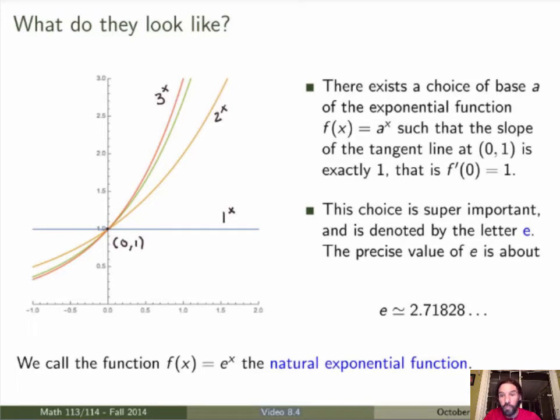Well it turns out that there's a very special choice of base which is such that the slope of the tangent line here at the point 0,1 is exactly 1. Now this turns out to be a super important choice of base. It's denoted by the letter e. The precise value of e is something like 2.71828.